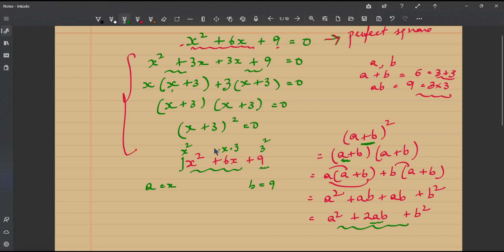Yeah 3 and of course a 2, 2 into x into 3, which is just 2 into a into b. So, this is a plus b the whole squared or x plus 3 the whole squared. Isn't it?